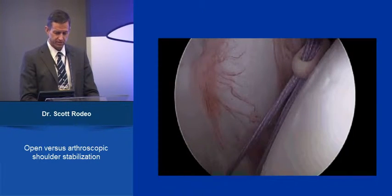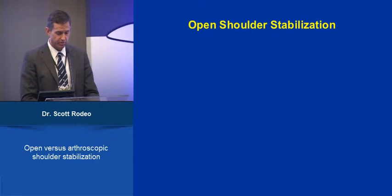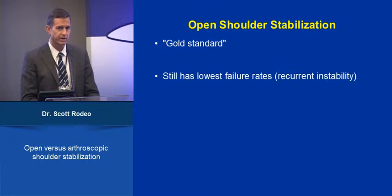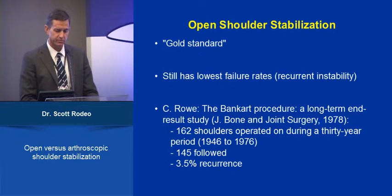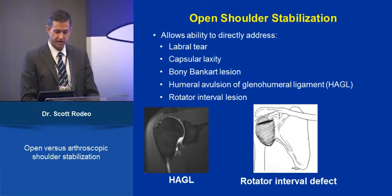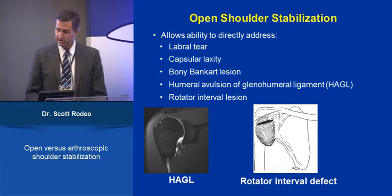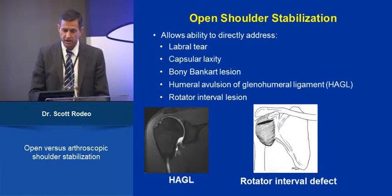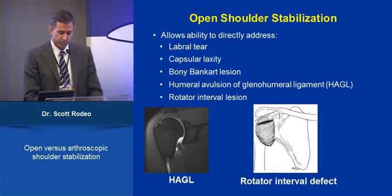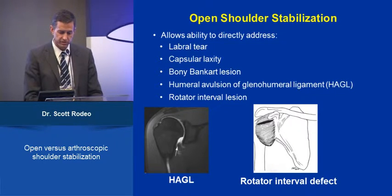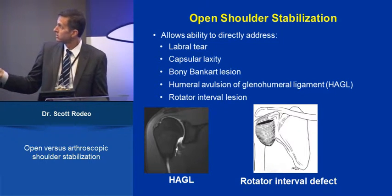With open shoulder stabilization — considered the gold standard — it still has the lowest failure rate. We can go back to the classic paper of Carter-Rowe from 1978, a large series of open Bankart procedures with a relatively low recurrence rate of 3.5%. Open shoulder stabilization allows the ability to address labral pathology, the capsule, bony lesions, humeral-sided avulsion of the glenohumeral ligaments, and rotator interval lesions.